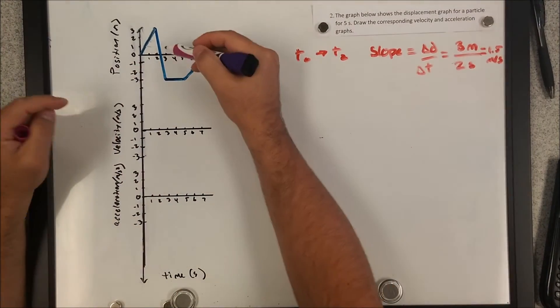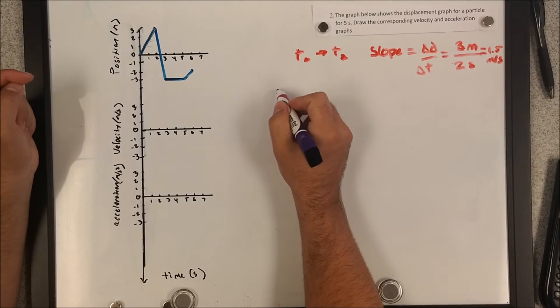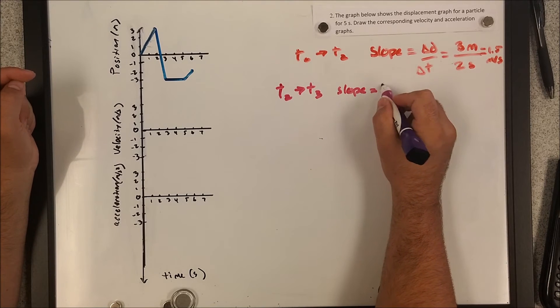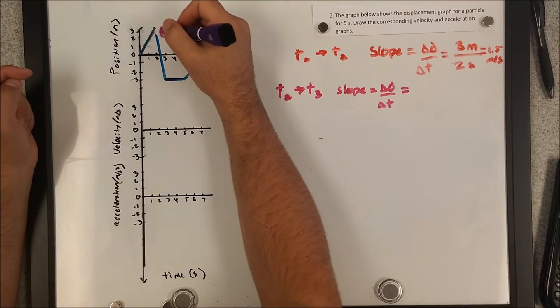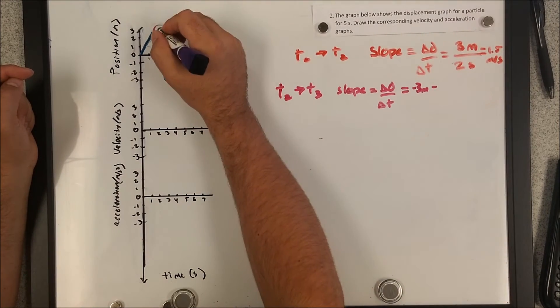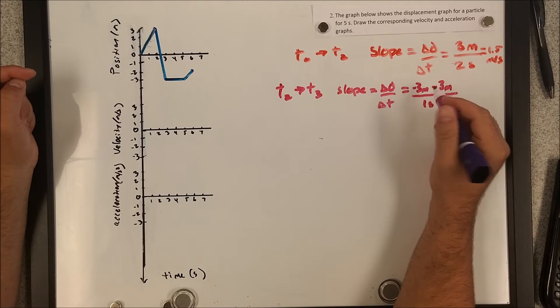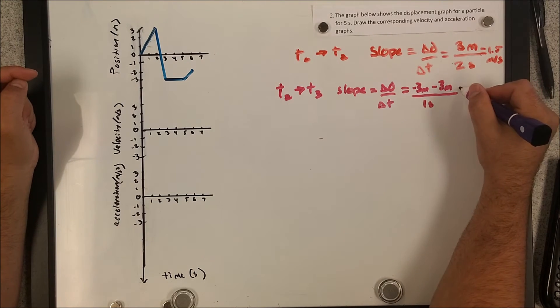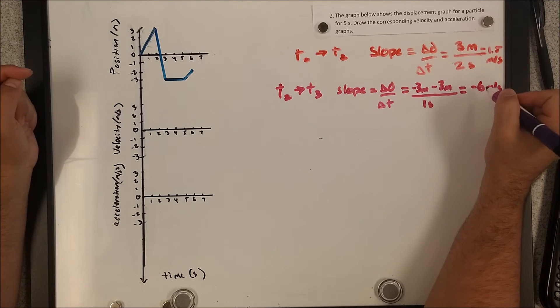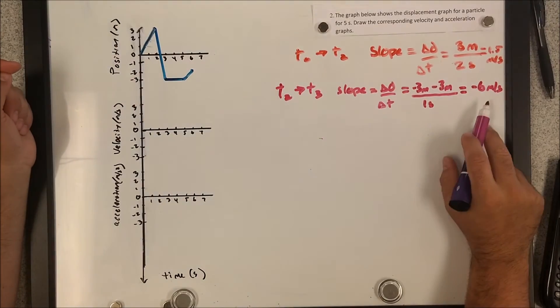Now I'm going to do segment from time two to time three. So t2 to t3, my slope is going to be the change in displacement during that period of time divided by the time. Final minus initials. We're finishing at negative three. So negative three meters minus my initial value, which is positive three meters, all over the change in time one second. So negative three minus three is negative six. We're doing with negative six divided by one, meters per second. That makes sense. We can analyze a few things here. We see that it's definitely a negative slope, and that slope is significantly more steep than the first segment, so it should be a greater value.